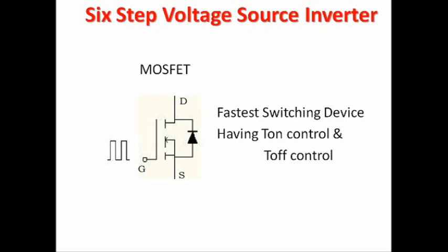With the MOSFET, we can turn on and turn off with the help of a gate pulse. For inverter operation, fast switching is very important. The performance of the inverter fully depends upon the switching frequency and the turn-on and turn-off control of the switching device. The characteristics of the MOSFET are therefore feasible to make this 6-step voltage source inverter.